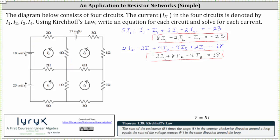Now we move on to circuit three, flowing in the counterclockwise direction. At the resistance of four ohms, current I sub two is flowing in the opposite direction, and at the resistance of six ohms, I sub four is flowing in the opposite direction. Starting at the resistance of four ohms: four times I sub three, minus four times I sub two, plus six times I sub three, minus six times I sub four, plus I sub three, plus three times I sub three. The current is flowing in the opposite direction of the volts, so this equals negative 27.